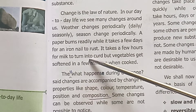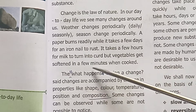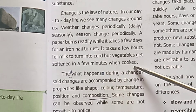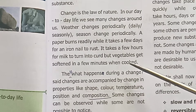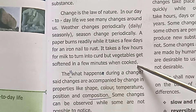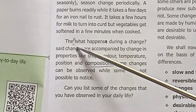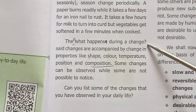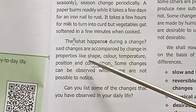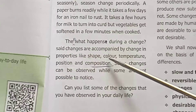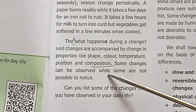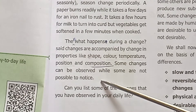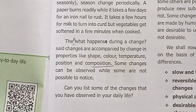It takes a few hours for milk to turn into curd, but vegetables get softened in a few minutes when cooked. During a change, there can be changes in shape, color, temperature, position, and combustion. Some changes can be observed while some cannot.